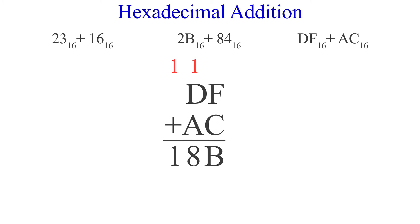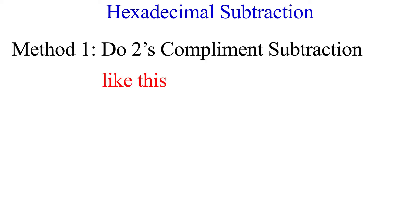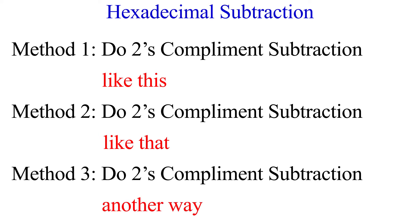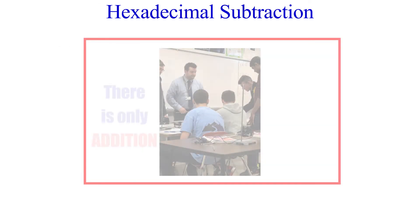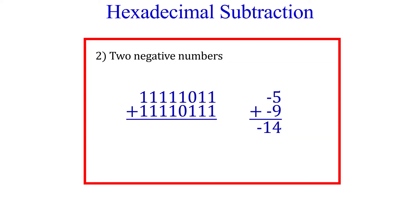Now we come to subtraction. The textbook gives three methods that can be confusing, but the funny thing is all three are the same — it's two's complement subtraction, just like we covered with binary numbers but achieved three different ways. There is no such thing as subtraction; there is only addition. When we looked at binary subtraction, we saw how adding the two's complement achieves the same goal.